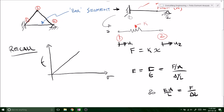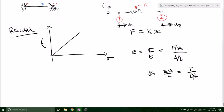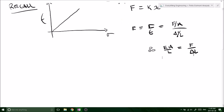Therefore, we've arranged this formula such that we've said that our EA over L is equal to F over delta L.